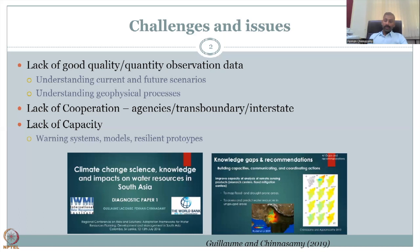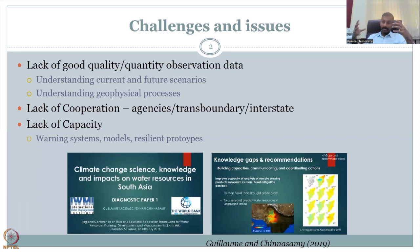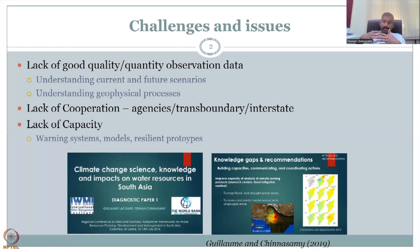There is also a lack of cooperation between agencies, transboundary states, districts, countries, and interstate entities. For example, four countries share the Ganges Basin. India cannot monitor Nepal's portion, but Nepal's Ganges Basin part contributes to the Ganges flow in India. So it is very important to understand how much water is incoming and outgoing, which affects agricultural productivity and rural development. This cooperation must exist if observation data is the key.